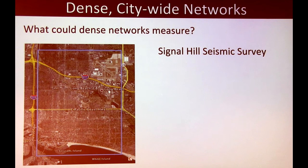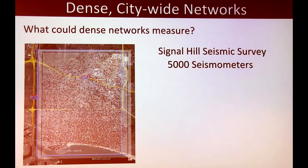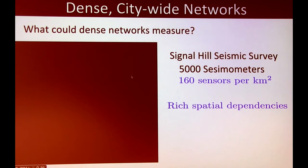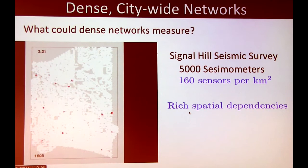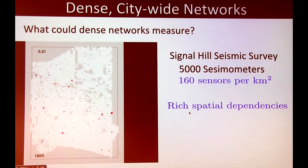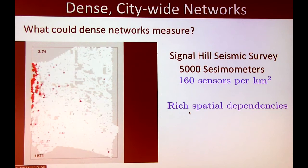As an example of what's possible, we have data from an accelerometer deployment in Signal Hill. They were trying to determine the subsurface structure in LA to extract oil, and they deployed an extremely dense network — 5,000 seismometers blanketing that area, about 160 sensors per kilometer squared, which is about as good as you can get. We have a video showing an earthquake moving through the Signal Hill network, and they shared this data after the earthquake, giving us an idea of what it would look like in real time. The wavefront traveling across the sensors is pretty easy to see.